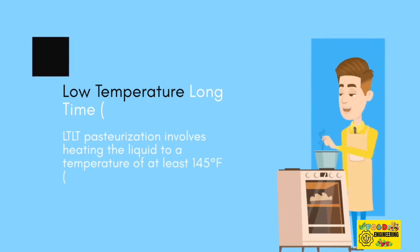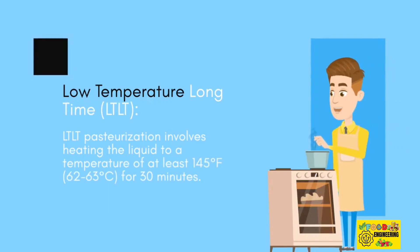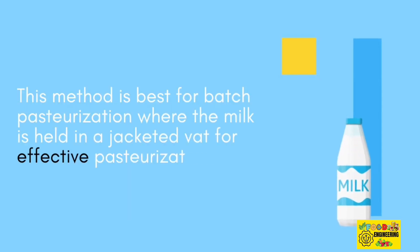Low Temperature Long Time (LTLT). This method is best for batch pasteurization, where the milk is held in a jacketed batch vessel at 63 degrees Celsius for 30 minutes.